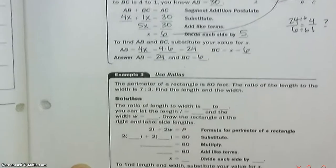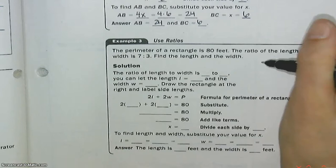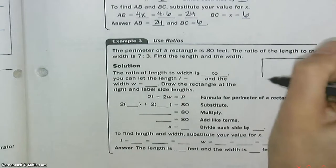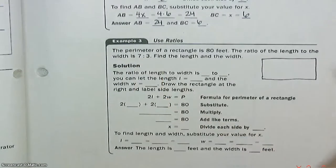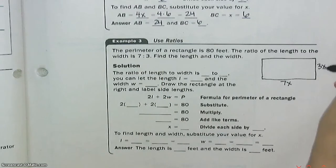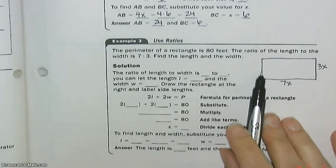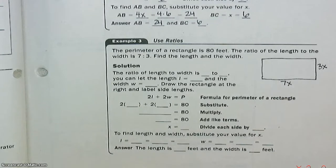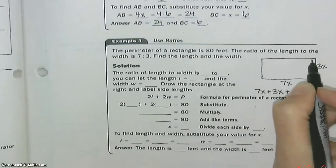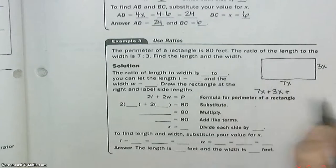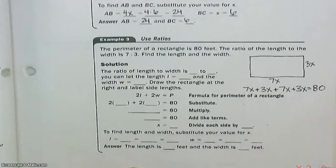Now we're going to apply this to a rectangle. The perimeter of a rectangle is 80 feet. The ratio of the length to the width is 7 to 3. Find the length and the width. So let's draw a rectangle. The ratio of the length to the width is 7 to 3. We're going to call this 7x, this 3x. I don't know what x is yet, we're going to figure that out. But we know that all the way around is 80. So 7x plus 3x plus 7x plus 3x, all the way around is 80. That's our equation.